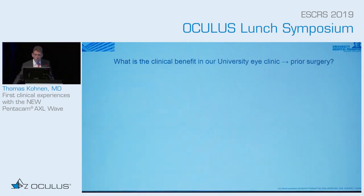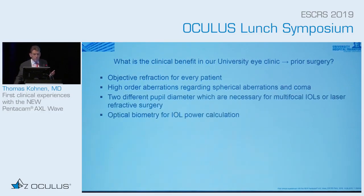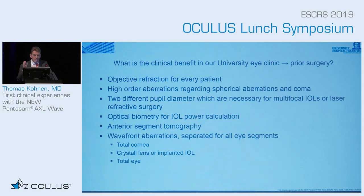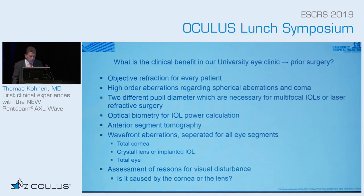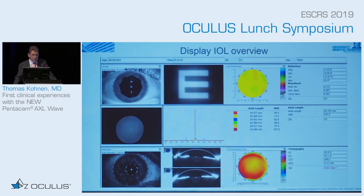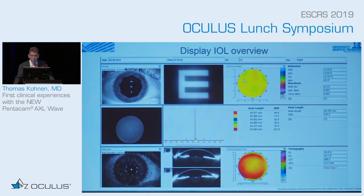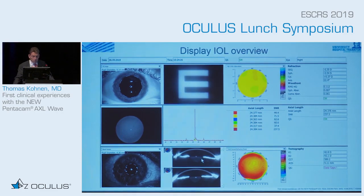For patients prior to surgery, what can we do? Objective refraction, high-order aberrations at two different pupil diameters, optical biometry for IOL calculation, anterior segment tomography, and wavefront aberrations with the total cornea, crystalline lens or implanted IOL, and the total eye. You have all these measurements on one display: the retroillumination, aberration measurement, total corneal refractive power, refraction, axial length, anterior tomography, and pupil size.